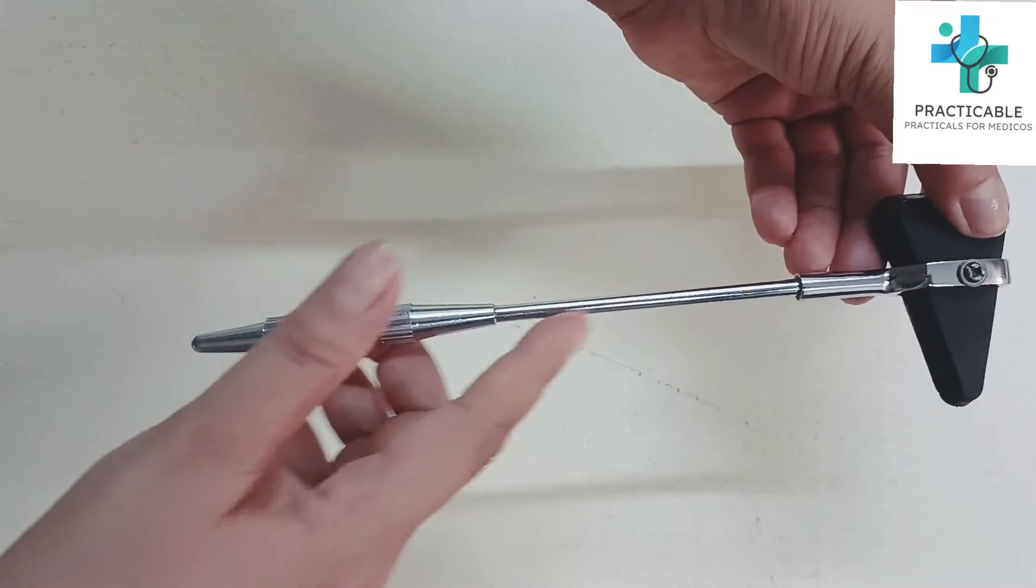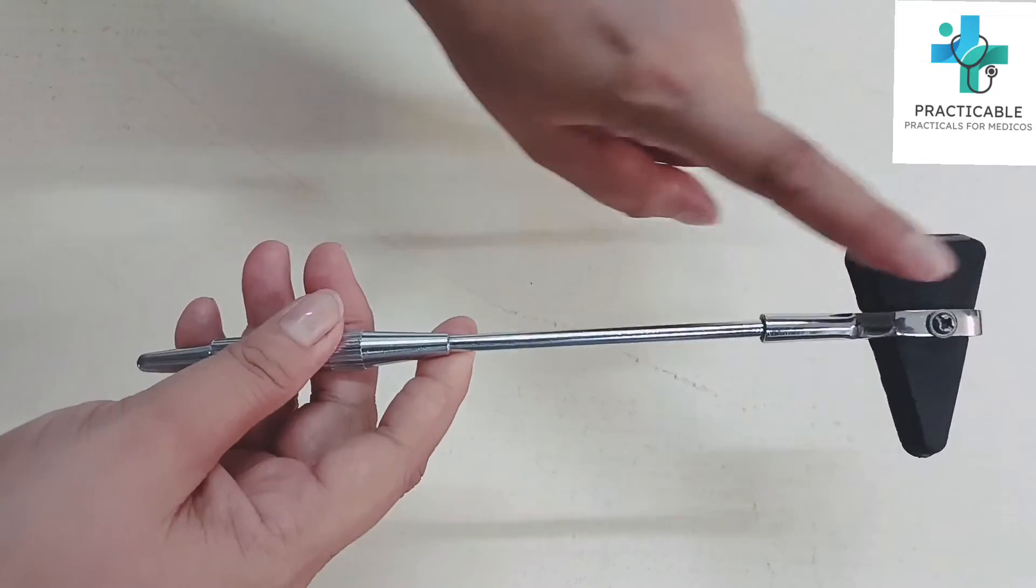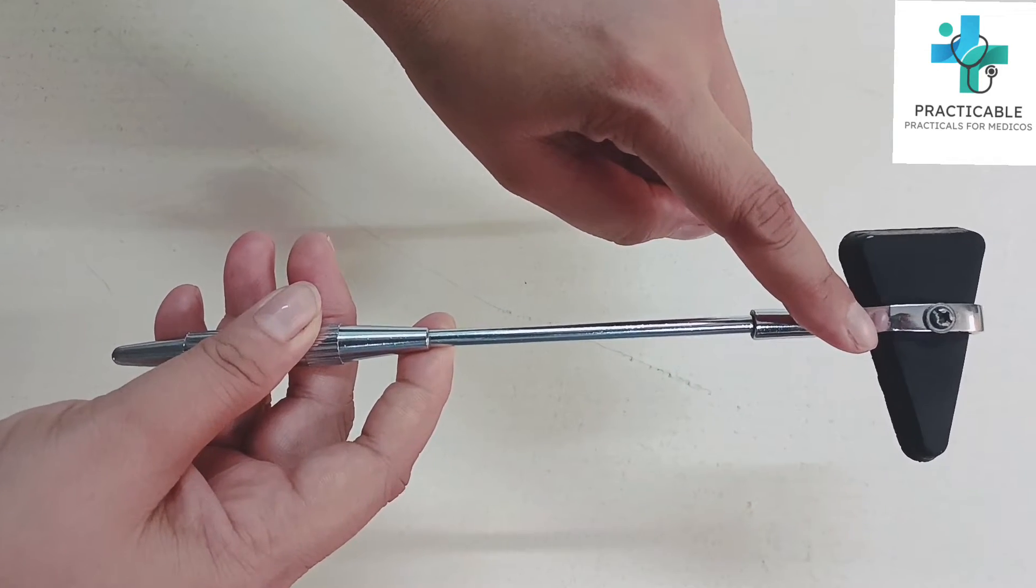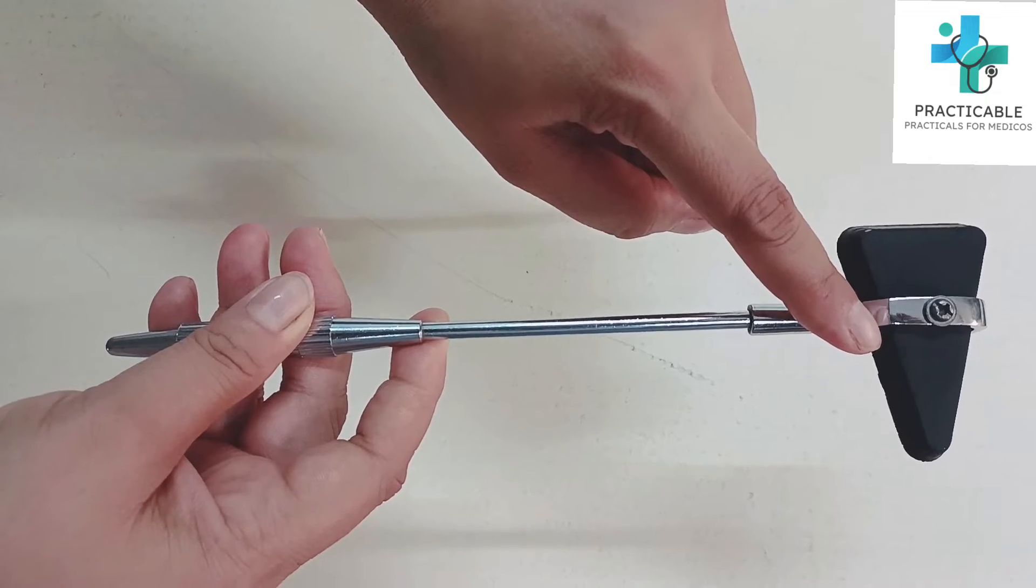This is a long metallic handle at one end of which a triangular soft rubber piece is attached, which provides a sharp blow to the tendon.